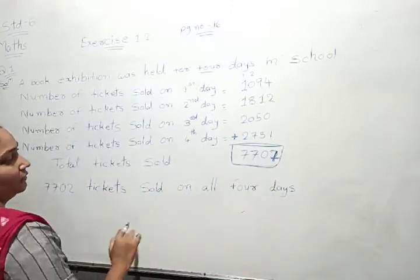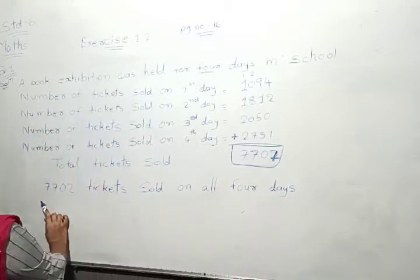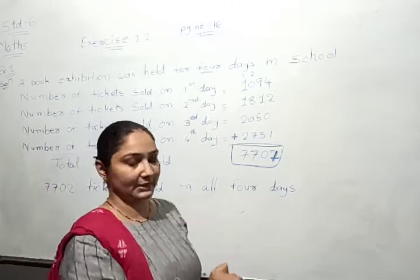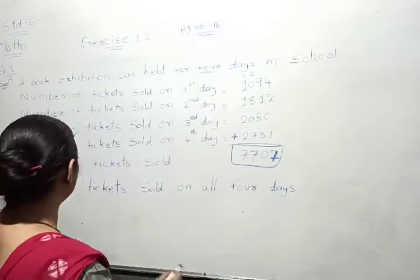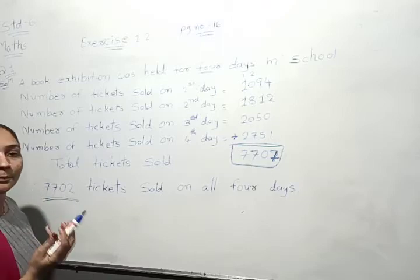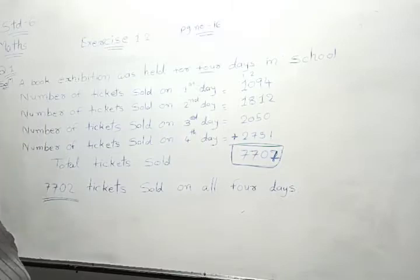Total tickets sold on all four days is seven thousand seven hundred two. 7702 tickets sold on all four days. That is the solution for question one.